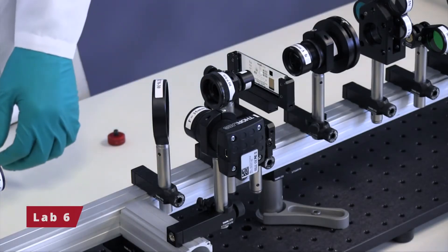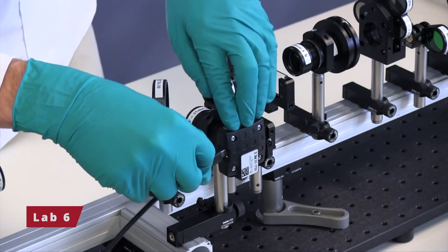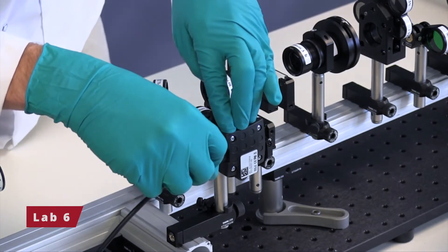Lab 6 introduces students to the Abbey theory of image formation, making use of a second camera to image the back focal plane and a resolution target customized for teaching imaging and diffraction.